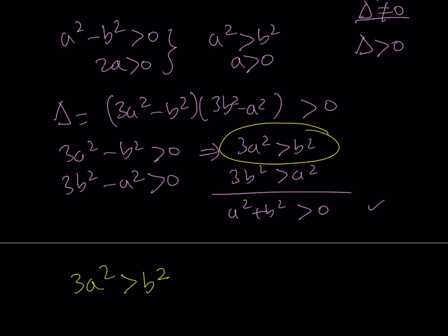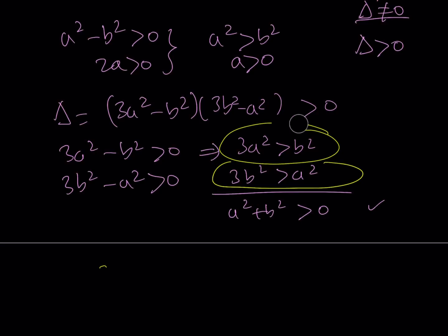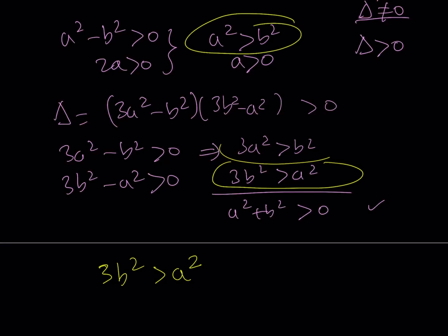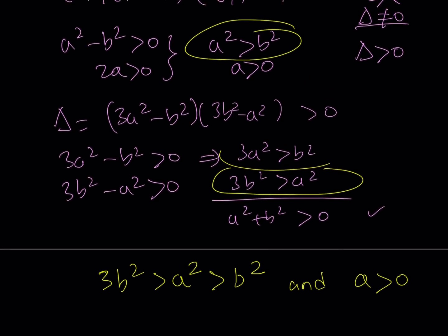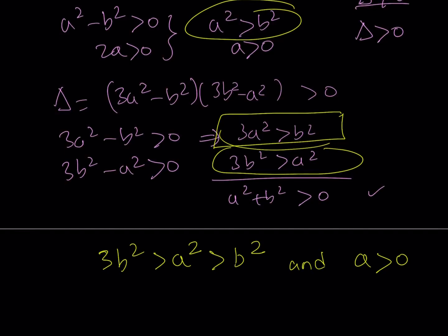Using the condition 3B squared greater than A squared: notice that if A squared is already greater than B squared, then multiplying by 3 gives 3A squared greater than B squared automatically. So the conditions simplify to: A is positive, A squared is greater than B squared, and 3B squared is greater than A squared. When all three are satisfied, the system has distinct and positive solutions.